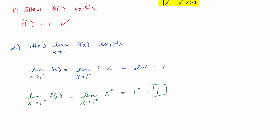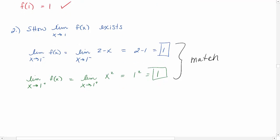We take a look at our left and right hand limit values. These match. Therefore, the limit as x approaches just 1 of f of x is equal to 1. Great, it exists.